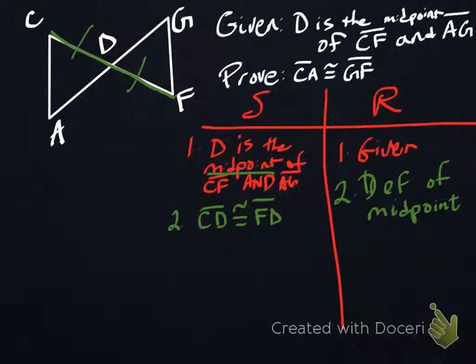Well, D is also the midpoint of AG, which is this line right here. So if D is the middle of that, then these are the same length.